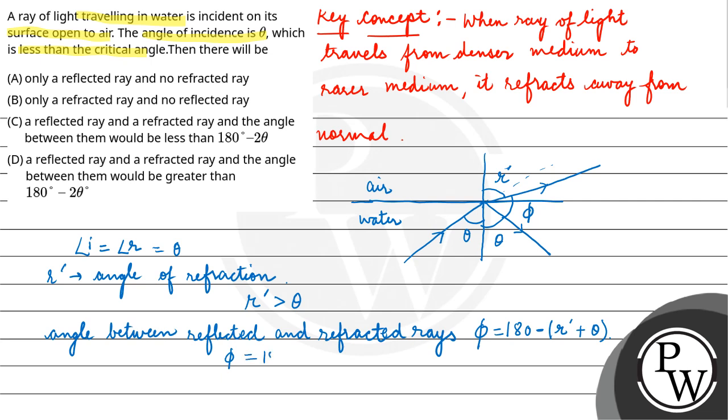Since r dash is greater than theta, so phi which is equal to 180 minus r dash plus theta, and if I write here 180 minus theta plus theta, then what will phi be? Greater. Because r dash is greater than theta. So that means phi is greater than 180 degree minus 2 theta.